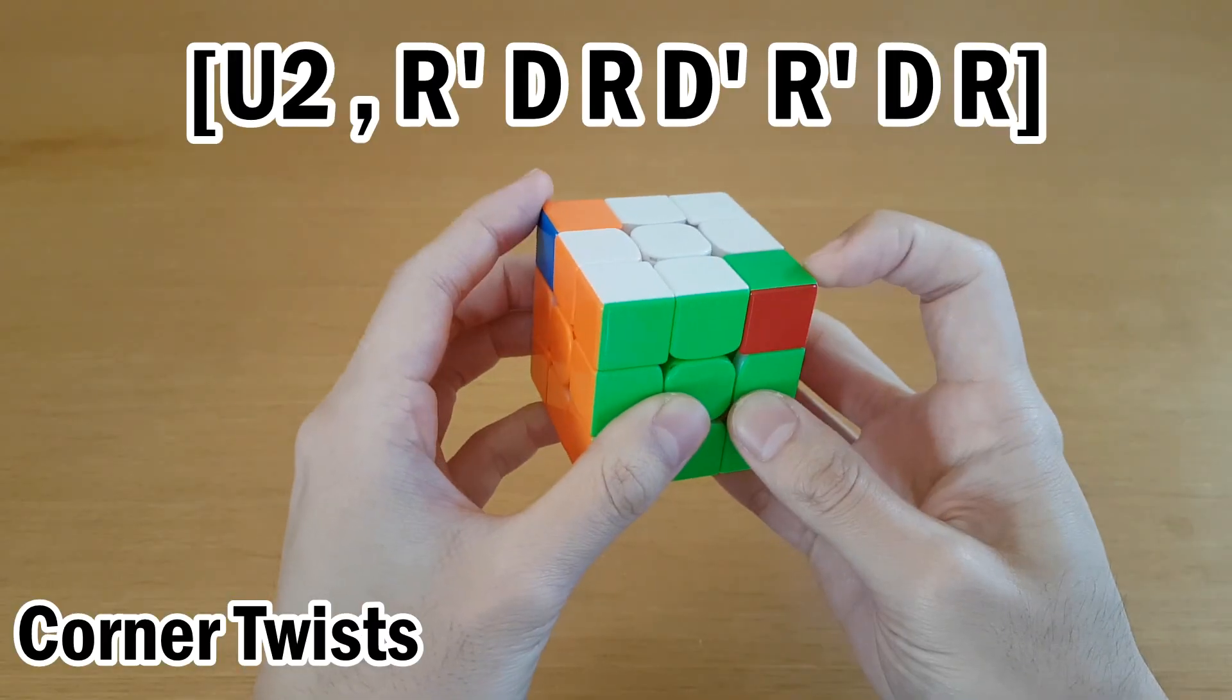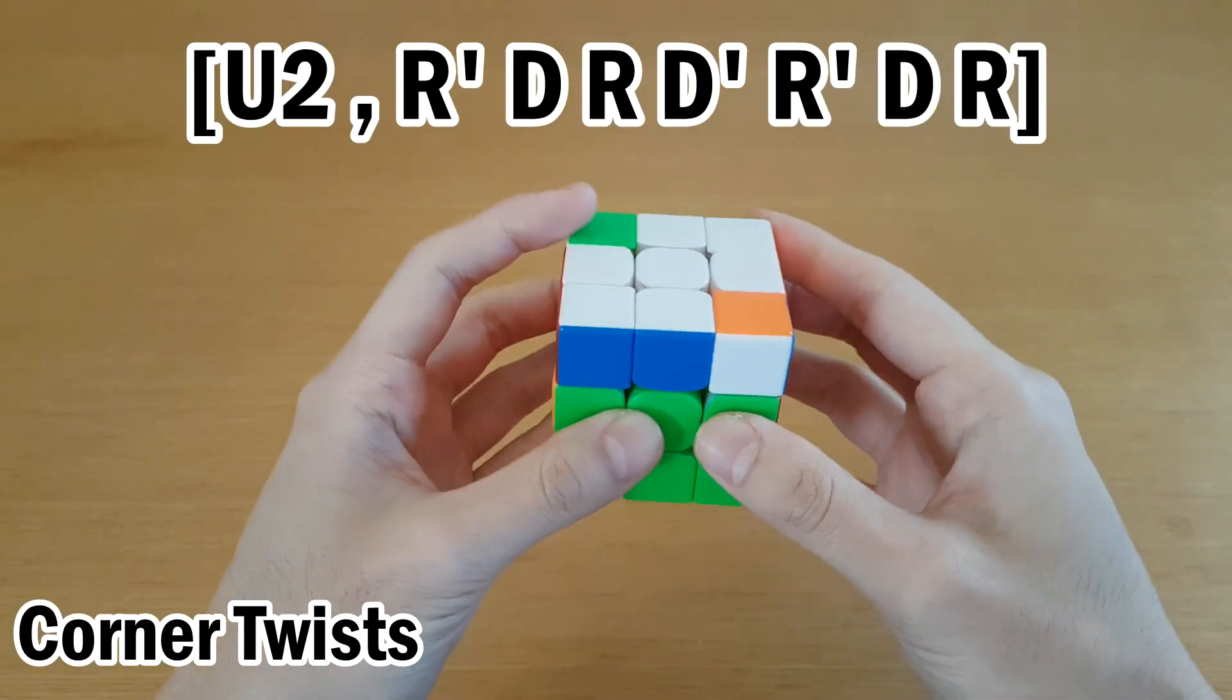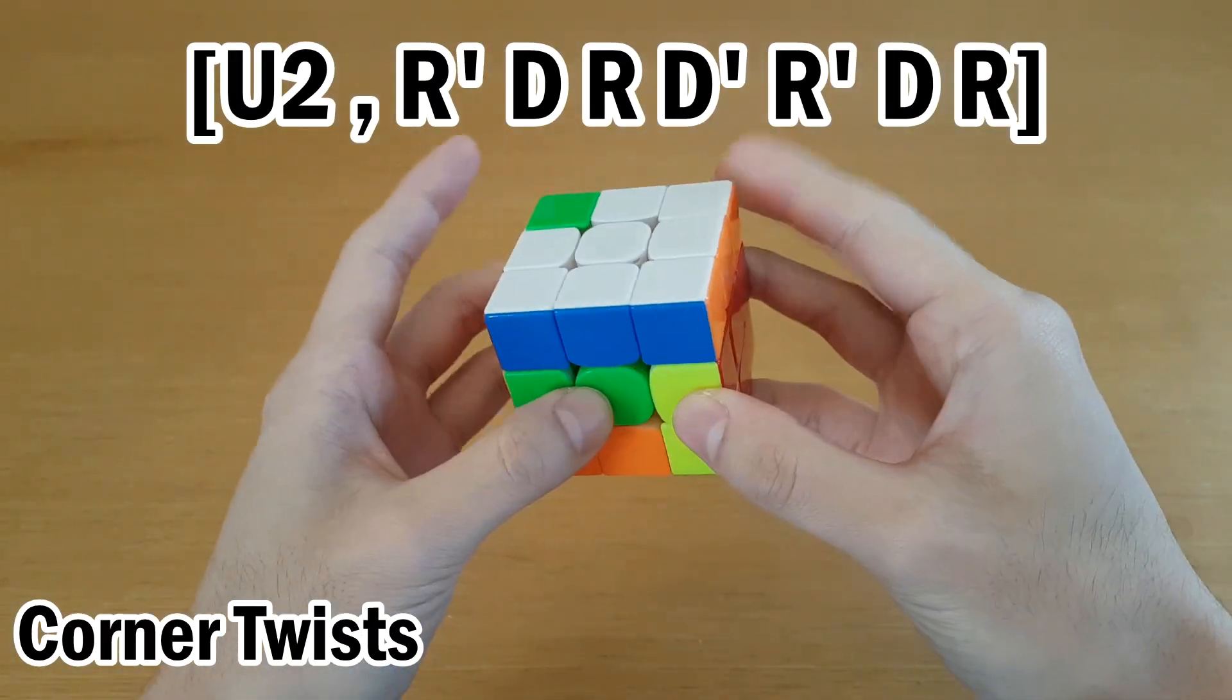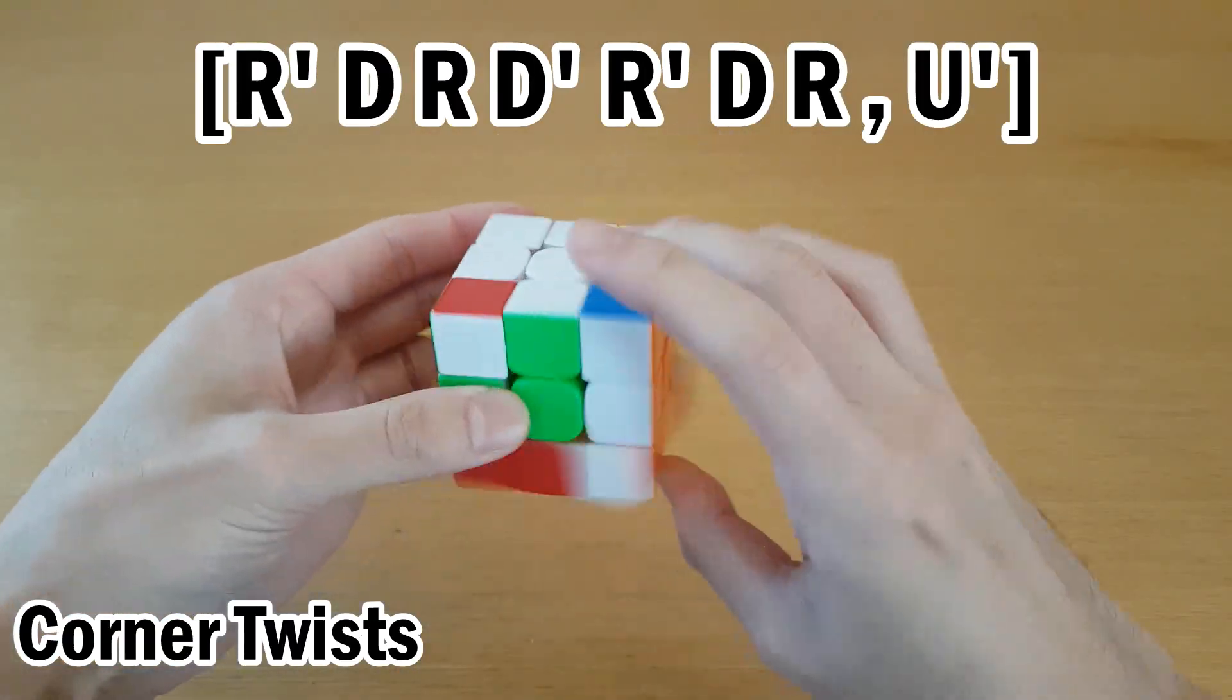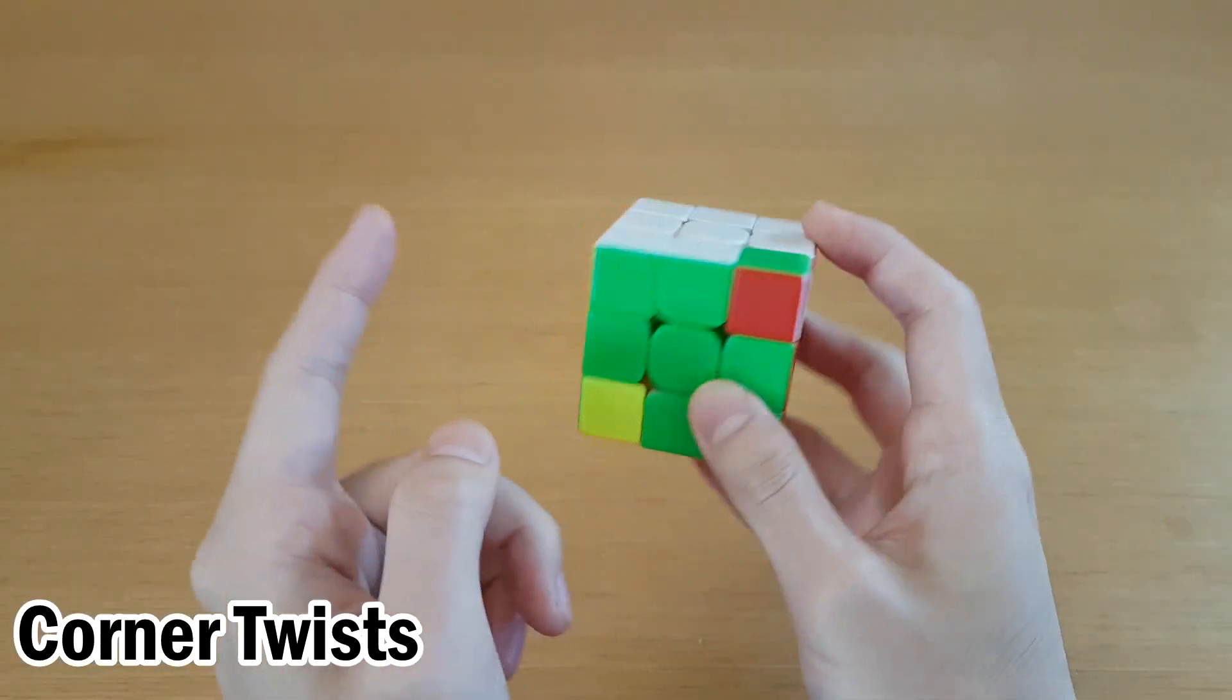And for a case like this, you can move this one over with white on front, do the first thing, move the other one over, and reverse it.